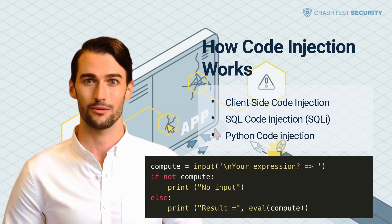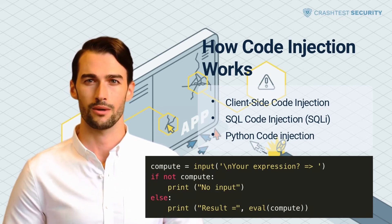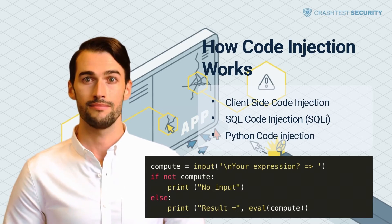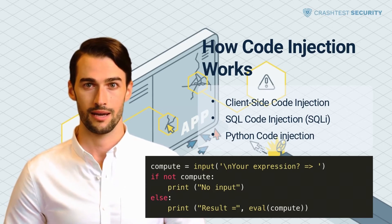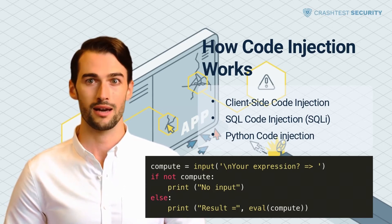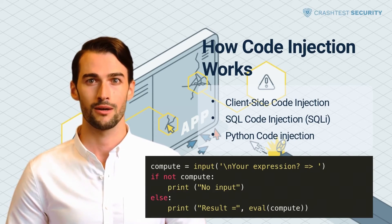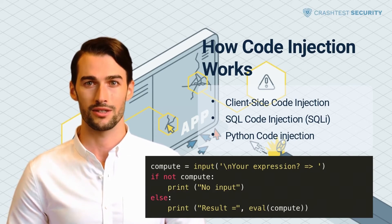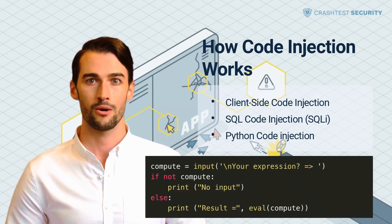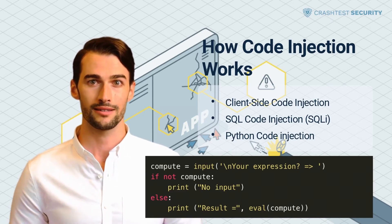Types of code injection attack exploits. Types of code injection attacks differ depending on the programming language used to develop the application's source code and the attacker's malicious code. This section explores some common categories of code injection vulnerability attacks.